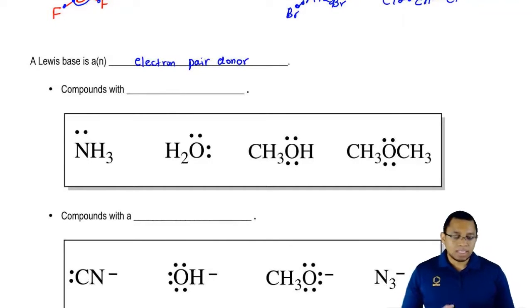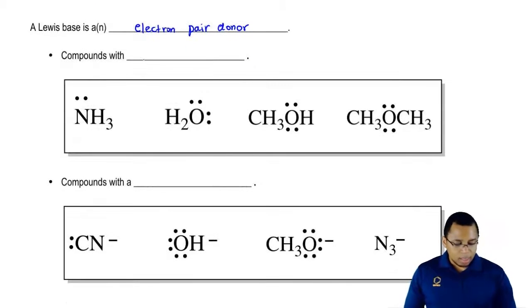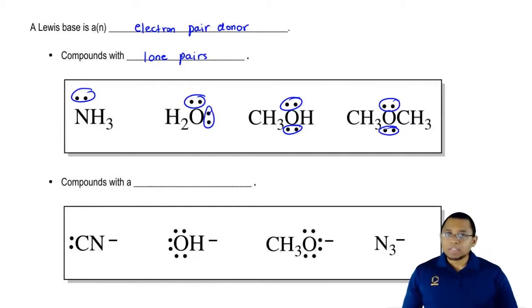What makes Lewis bases? Lewis bases are compounds with lone pairs. See here, all of these, what they have in common is they all have lone pairs. They're all Lewis bases.